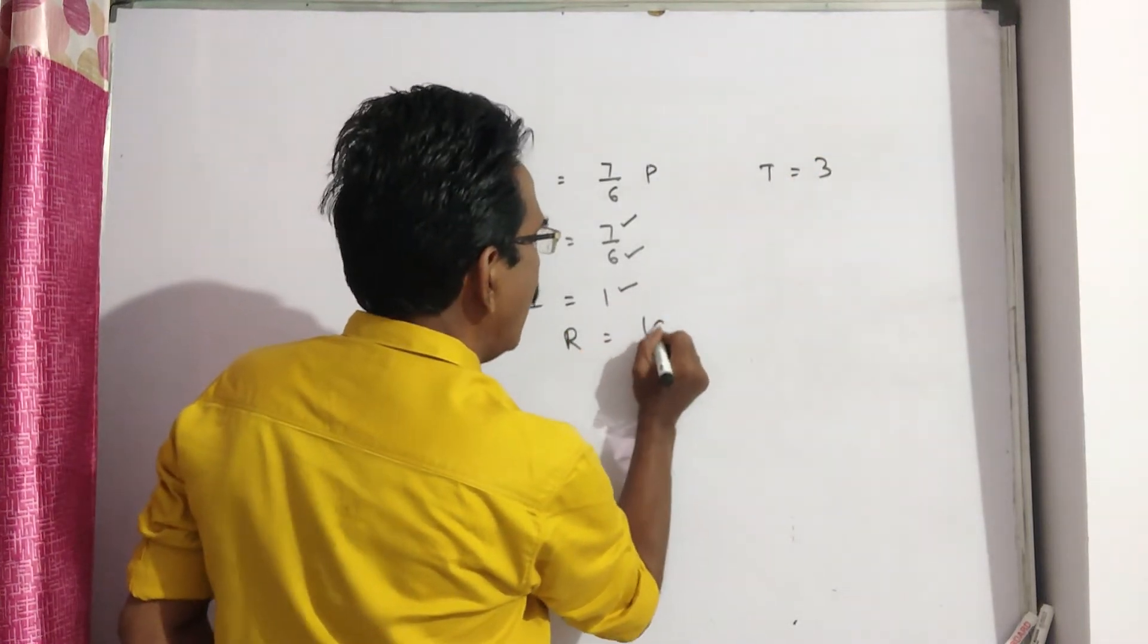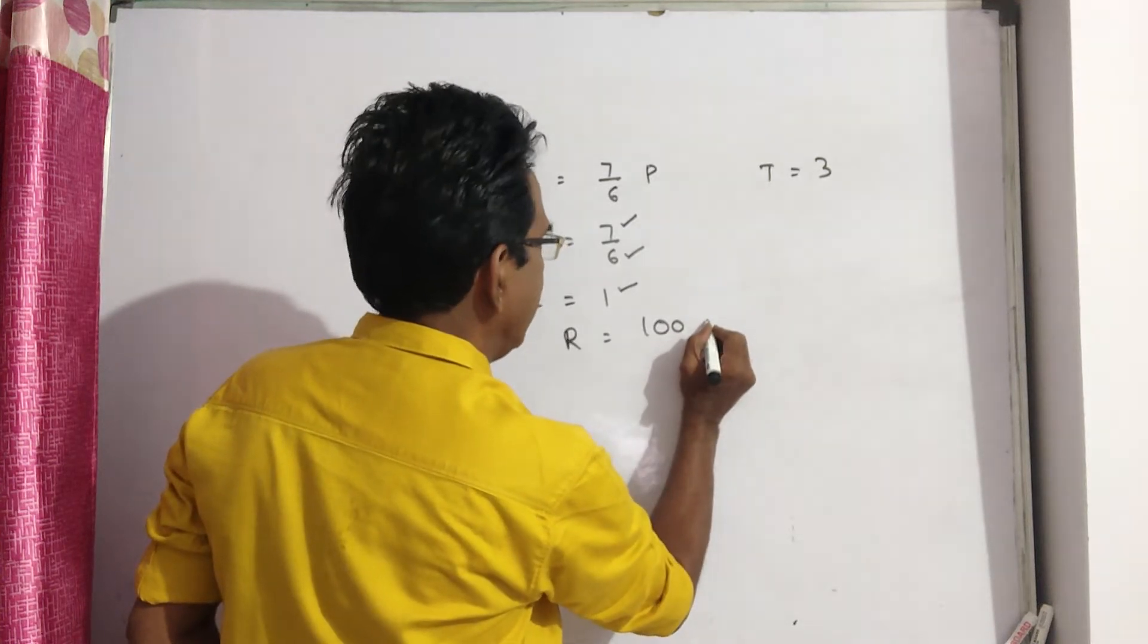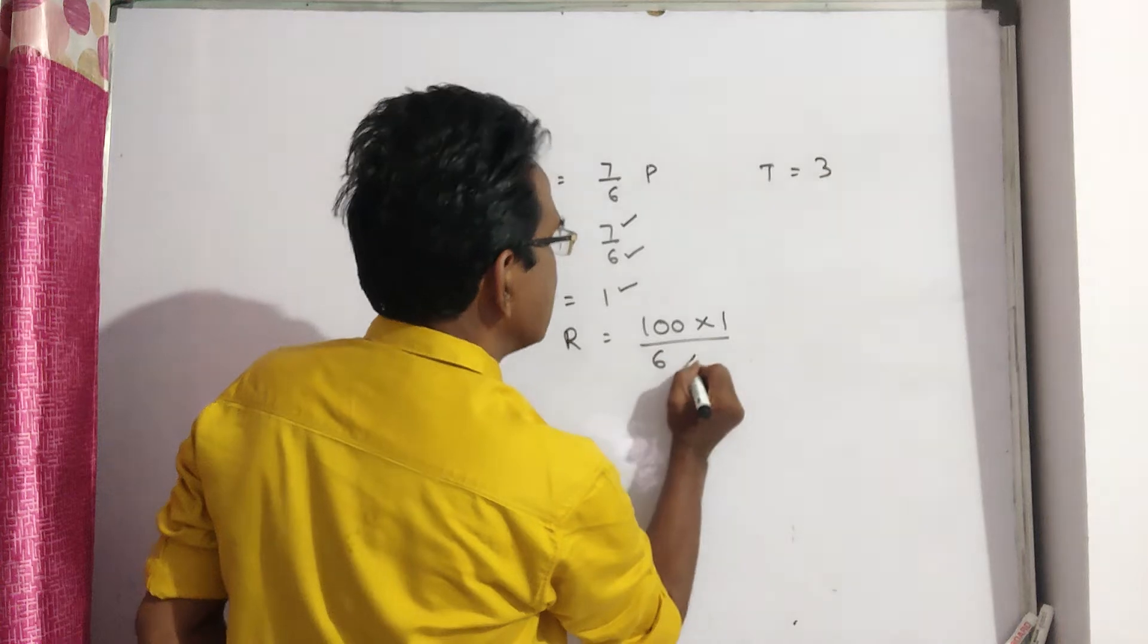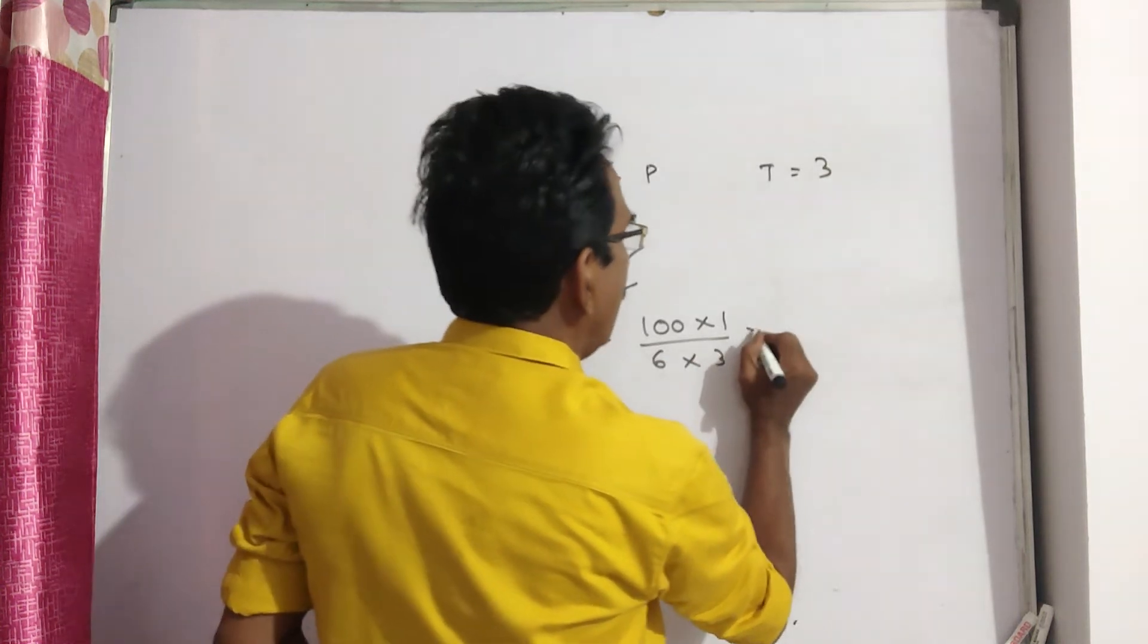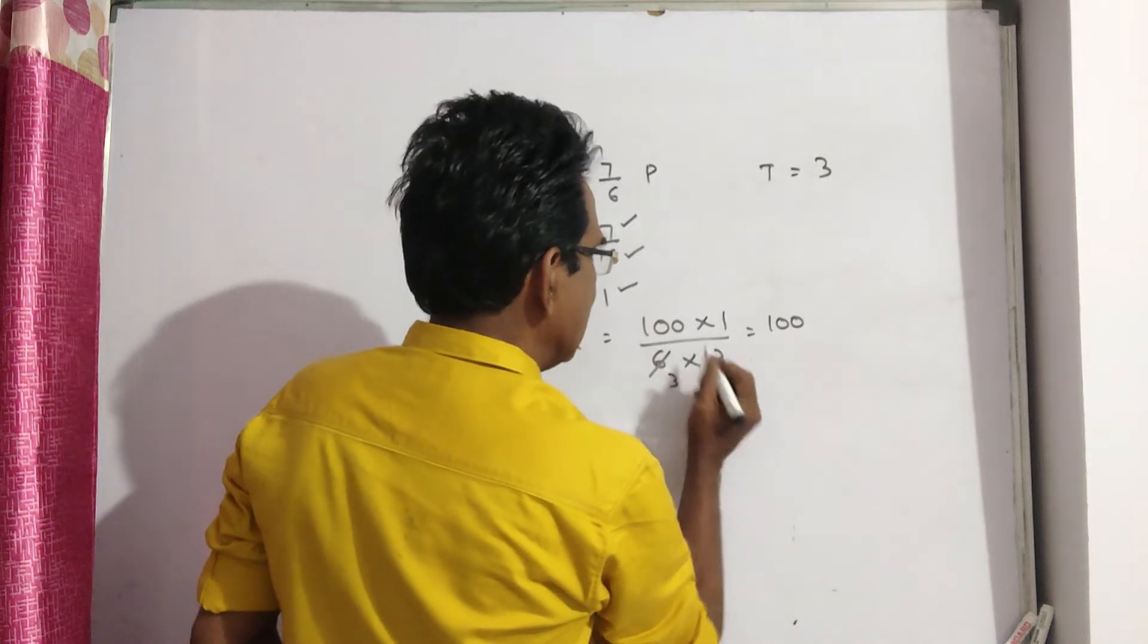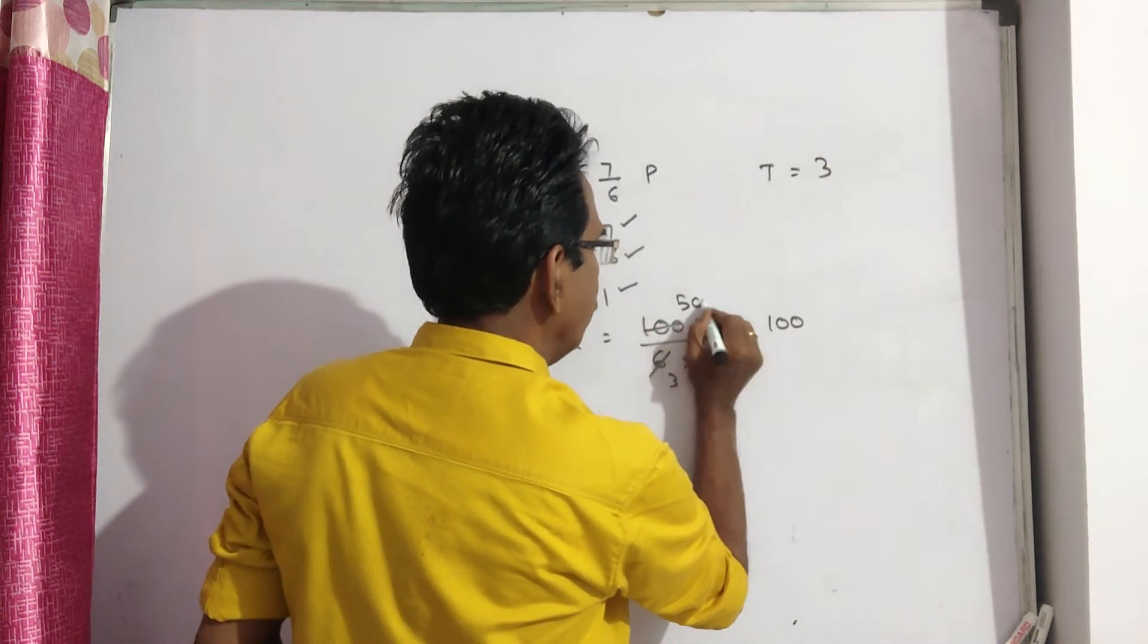Then R is equal to 100I by PT. 100I by PT: 6, T is 3. 100 by 9... sorry, 2 threes, 2 fifties. So 50 by 9.